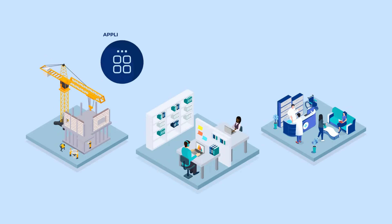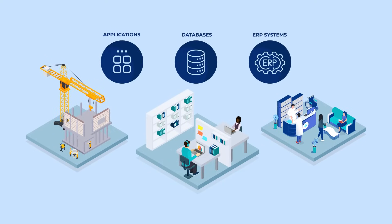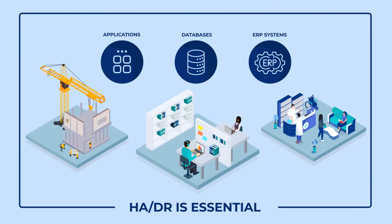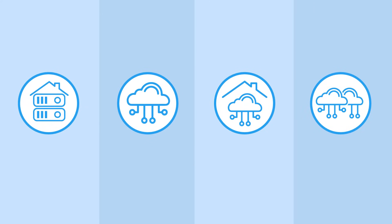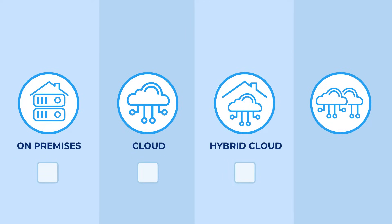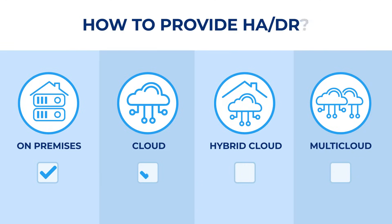Organizations rely on critical applications, databases, and ERP systems. High availability and disaster protection for these workloads is essential. Every day you have more choices than ever for where you run your critical workloads — on-premises, in the public cloud, or in a hybrid or multi-cloud environment. Each of these choices raises questions about how to provide HA and DR.